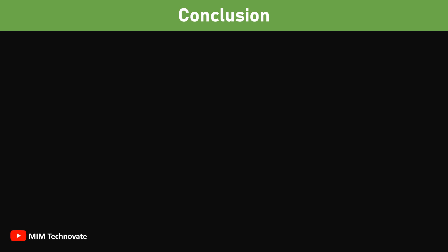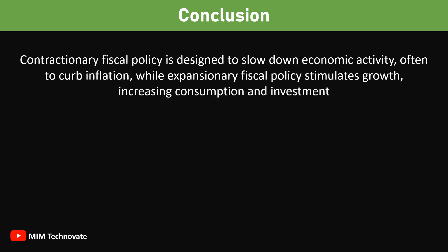Conclusion: contractionary fiscal policy is designed to slow down economic activity, often to curb inflation, while expansionary fiscal policy stimulates growth, increasing consumption and investment.